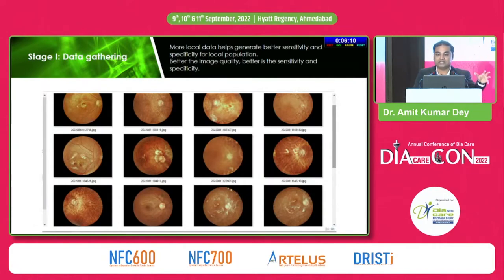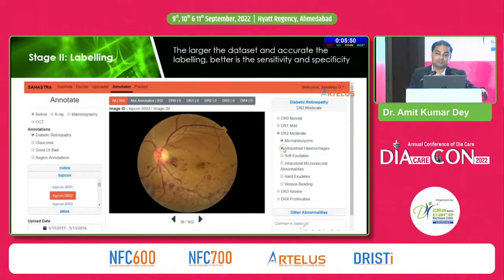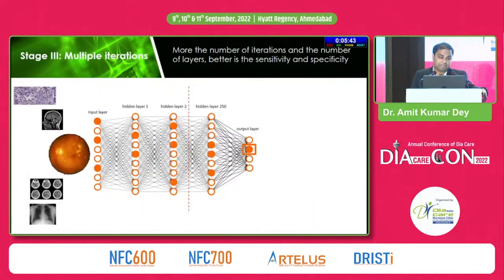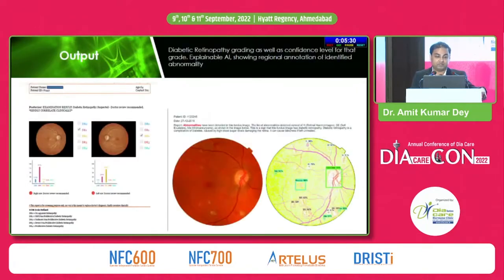But is it that easy? Trust me, it's not, because there are three stages. The first is data gathering — more local data generates better sensitivity and specificity for the local population, and better image quality improves the AI's accuracy. The second is labeling — identifying what each image and each point represents, which improves over large datasets. The third stage involves multiple iterations: more iterations and more layers in the algorithm yield better sensitivity and specificity. A lot of work goes into delivering that five-minute AI report.